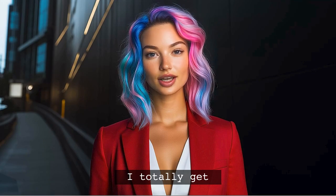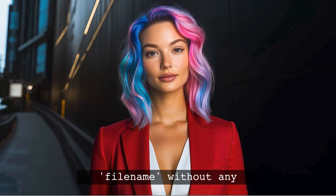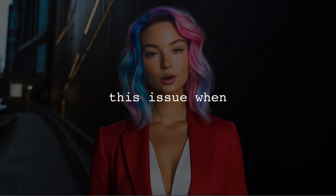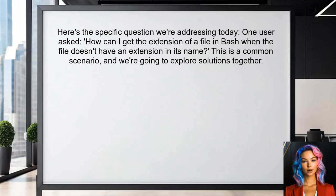You might have files named just a file name without any extensions, and it feels impossible to sort them. You're not alone in this struggle — many people face the same issue when scripting in Bash. One user asked: how can I get the extension of a file in Bash when the file doesn't have an extension in its name? This is a common scenario, and we're going to explore some solutions together.